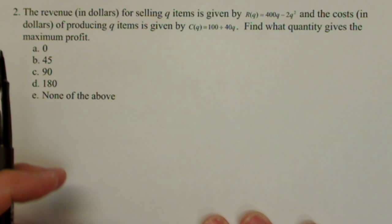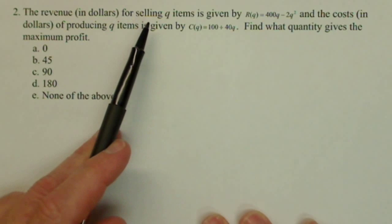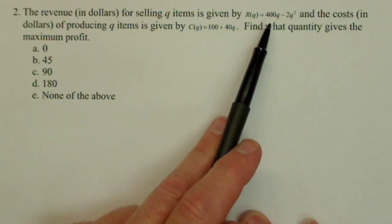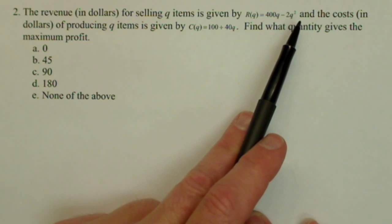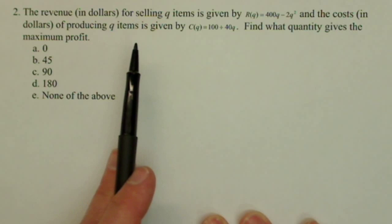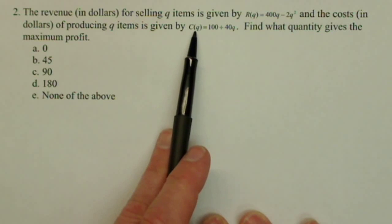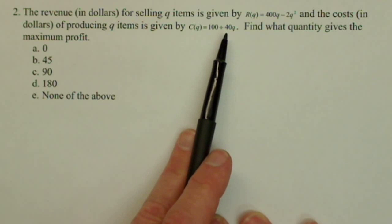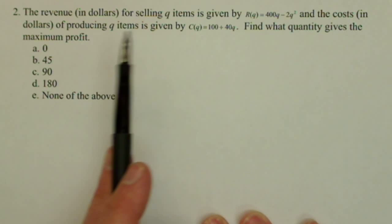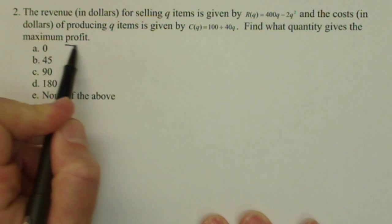We have the situation where the revenue in dollars for selling q items is given by R(q) = 400q - 2q², and the costs in dollars for producing q items is given by C(q) = 100 + 40q. What quantity gives the maximum profit?